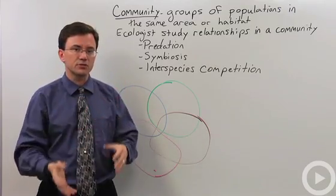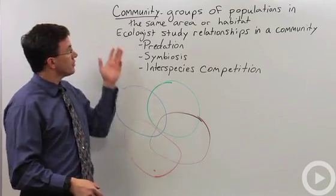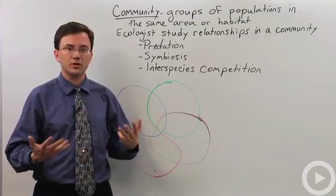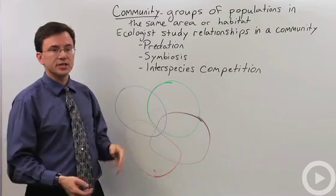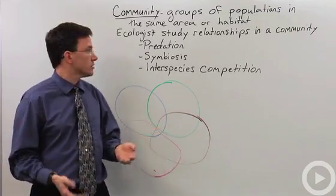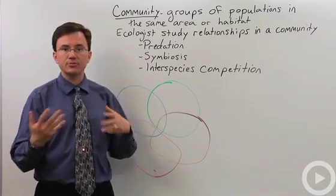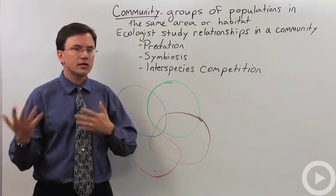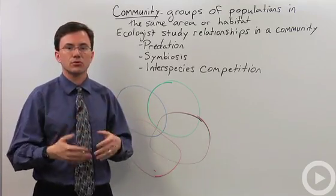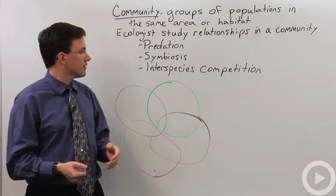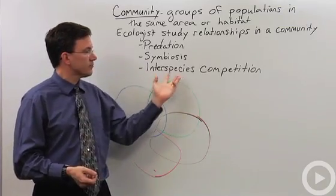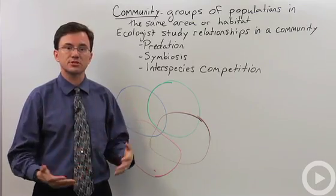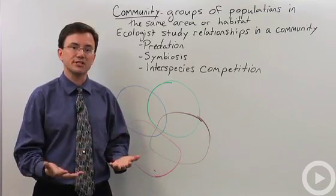But if you put the effort into it, it can really pay off. Now there are some particular kinds of relationships that you stereotypically find within a community. You have predation — that's obviously what's eating what. You have symbiosis, where perhaps two species live in close relationship to each other and maybe one helps the other, or maybe they both benefit. Then you often will find interspecies competition, which is when you have two different organisms going after the same resource.